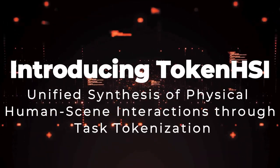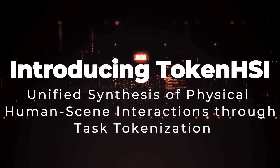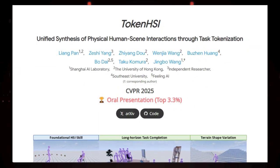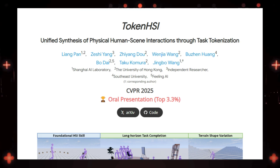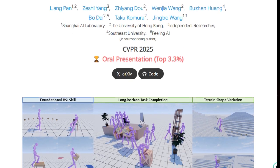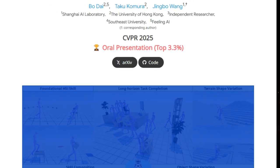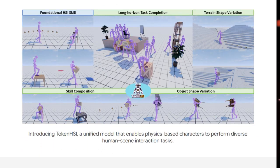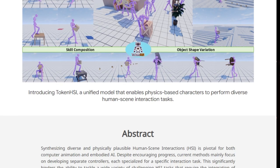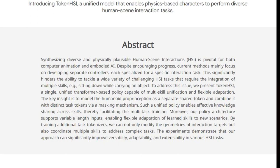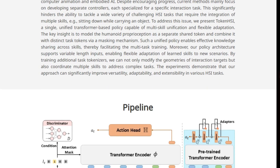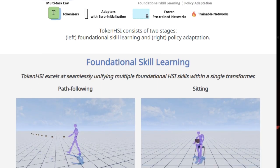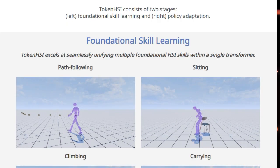Paper number 3: Introducing Token HSI — Unified Synthesis of Physical Human-Scene Interactions Through Task Tokenization. Get ready to see something really cool in the world of AI and character animation. We're taking a look at Token HSI, and what makes this paper truly unique is its ambition to create a single, unified AI model capable of handling a whole range of physical interactions between humans and their environment. Forget about having separate AI controllers for walking, sitting, climbing, or carrying objects — Token HSI aims to do it all within one framework.